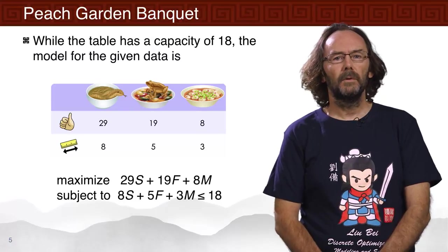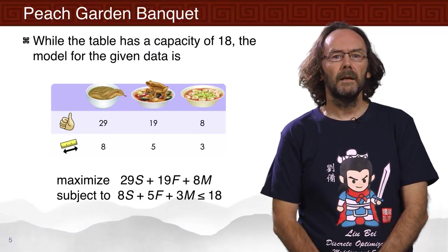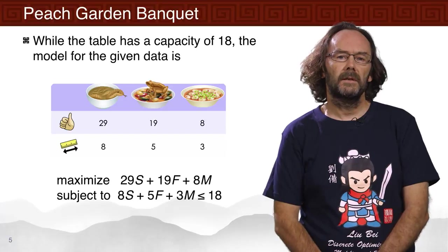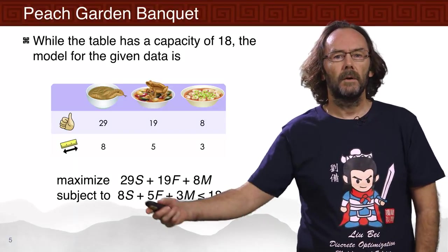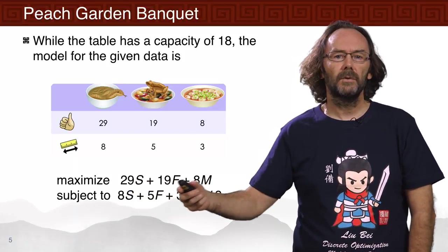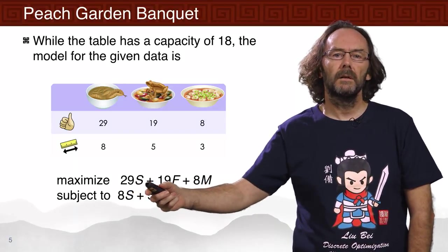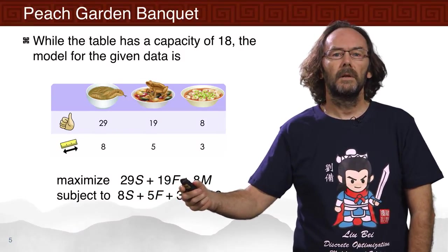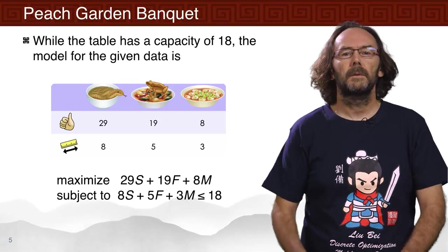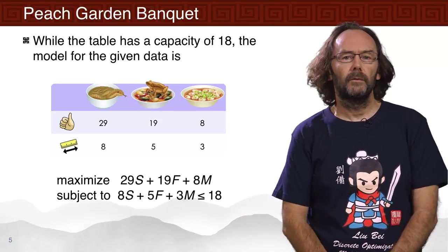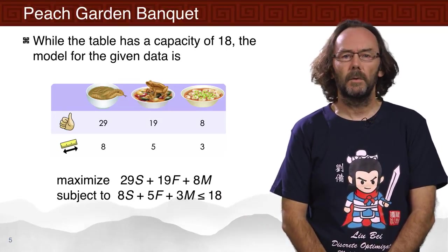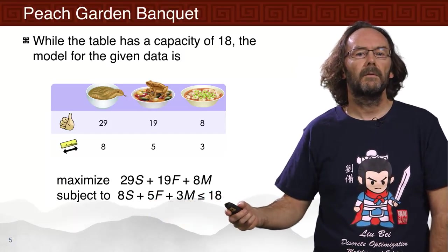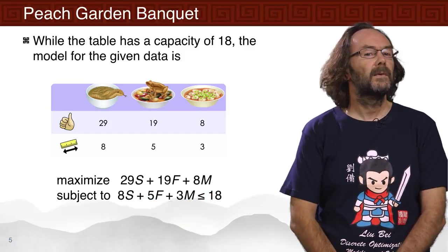For this example, if the capacity of the table is 18, then what we're really trying to do is solve this simple linear program: maximise the satisfaction, which is 29 times the number of snake soup dishes plus 19 times the number of kung bao frogs plus 8 times the number of mapo tofu's. That's the satisfaction we're trying to maximise, subject to this capacity constraint — basically, we have to have those dishes fit onto the table.